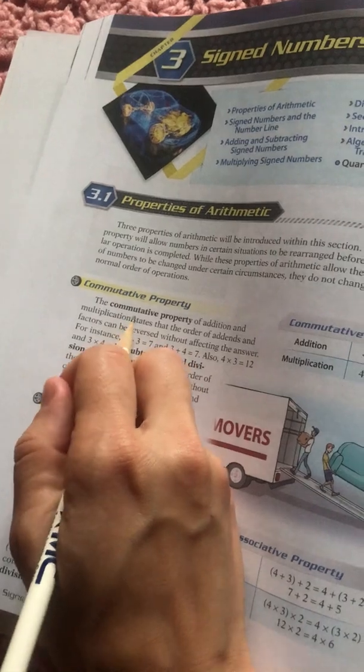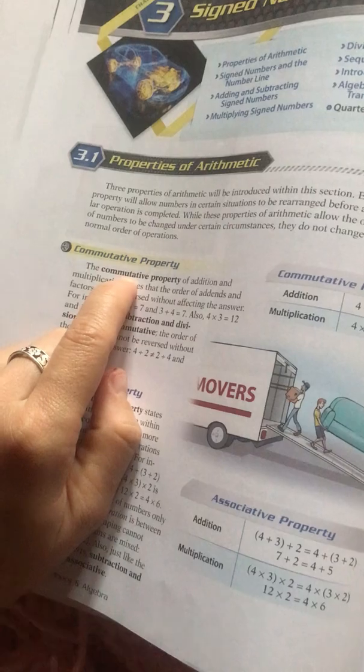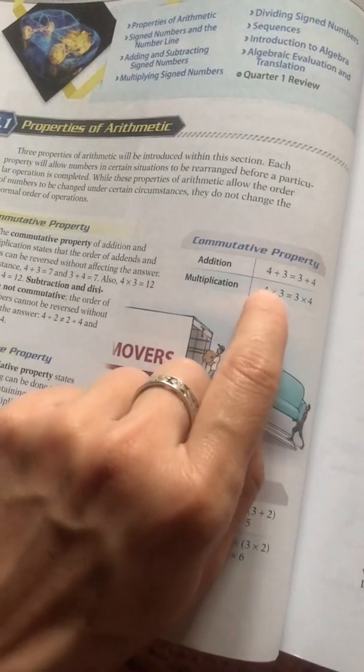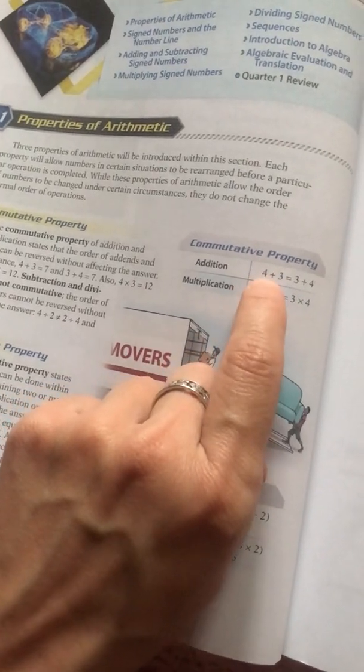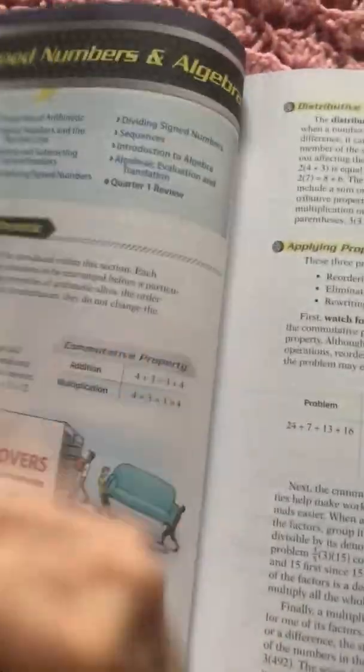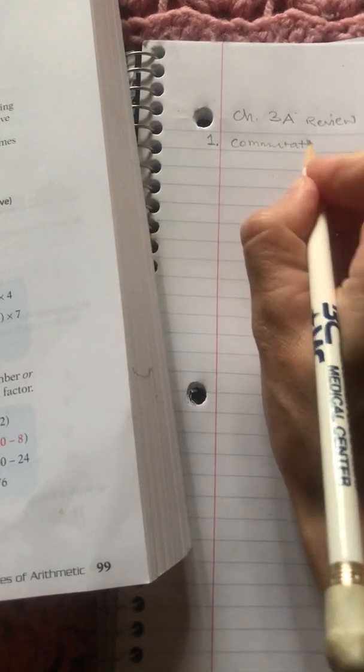Now how are we going to remember this? If you've ever heard of somebody when they say they're going to work and they have to commute to work, the word commute means like go. So let's just think of it like, look, they drew the movers here. You can have 4 plus 3 or you can have 3 plus 4. You can make them commute and go move places. So whatever helps your mind remember it when you need it. So commutative is our answer.